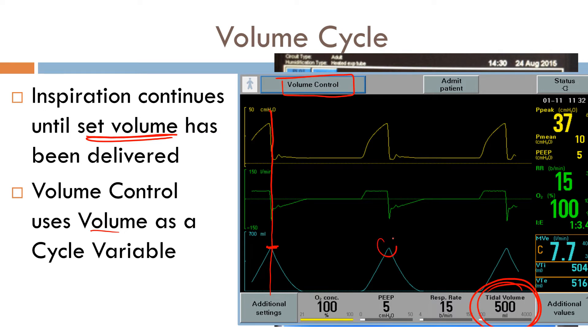Just scan up. 500 cc, it stops delivering your breath. 500 cc, it stops delivering your breath. 500 cc, it stops delivering your breath. So in volume control ventilation, the cycle variable is volume.